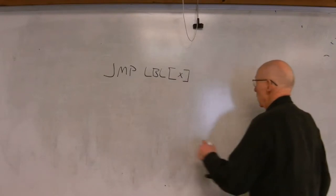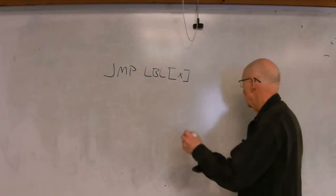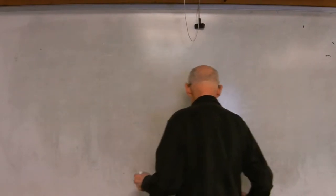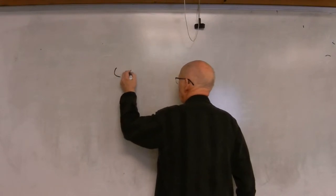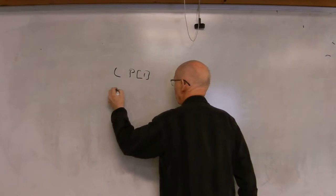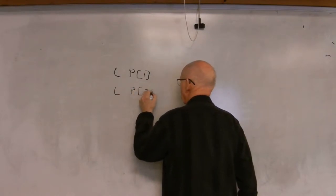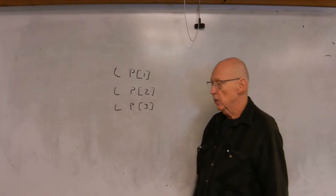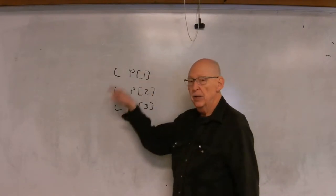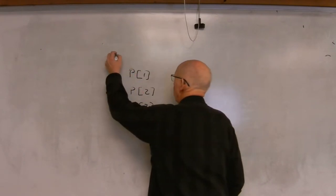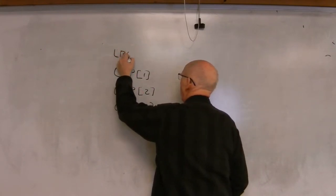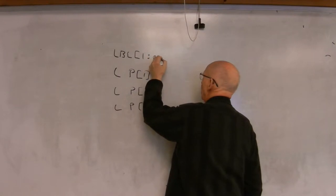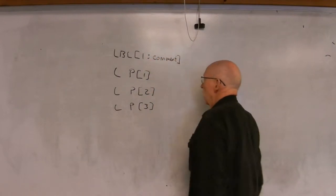For example, you could have a number of motion instructions. Let's say you have a real simple program, just three moves, and you want to continually execute. Well, you have to put a label and let's just say we'll give it a number, label one, and you can add a comment to provide more information.